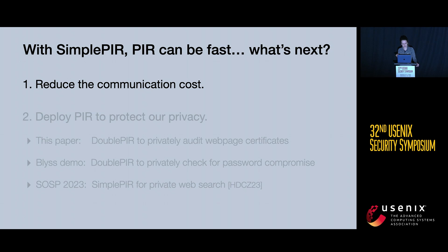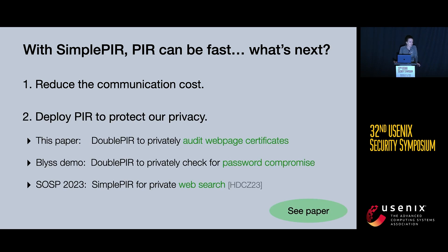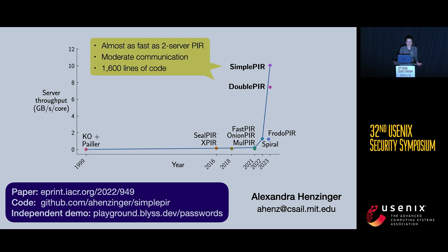What are the open research questions? First, it would be exciting to further reduce the communication cost — perhaps eliminating the hint download or reducing online query sizes. Second, it's an exciting time to think about real deployments to preserve privacy. In this paper, we show how DoublePIR can be used to privately audit web page certificates without revealing browsing history. There's also a demo by a startup called Bliss that uses DoublePIR to privately check if your password has been compromised. Finally, we have new work coming out at SOSP that uses SimplePIR to build private web search. Thank you so much for your attention, and I'm happy to take any questions.